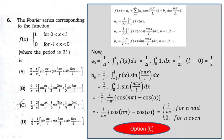Looking at the options, those with a₀ = 2/π are not correct. Options with a₀ = 1/2 — that is, options C and D — may be correct.